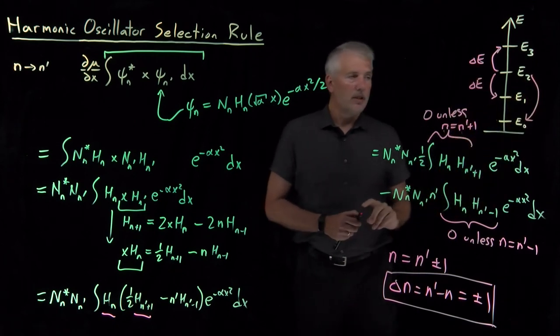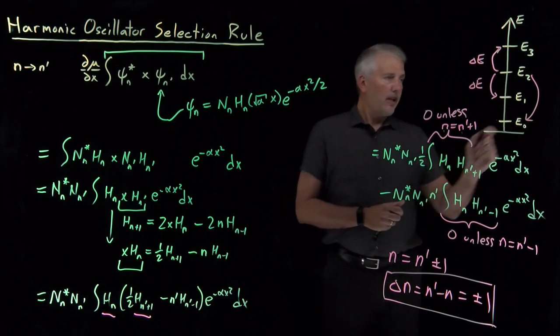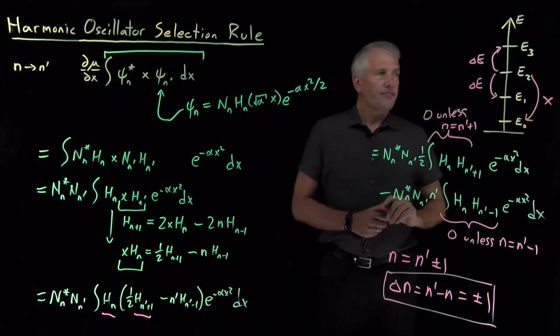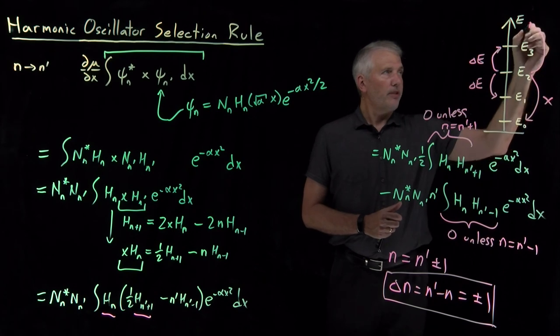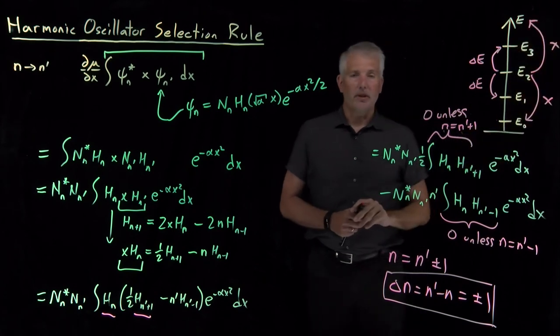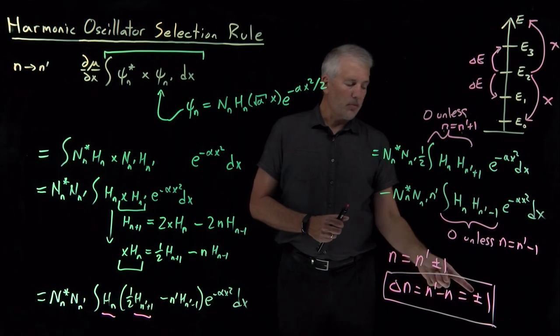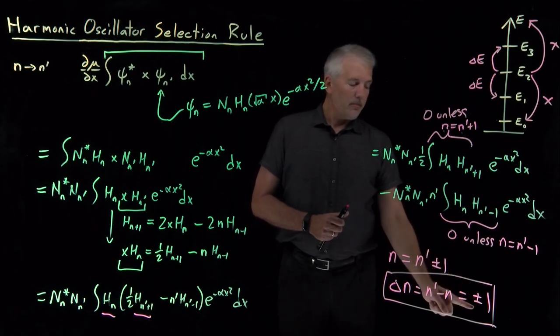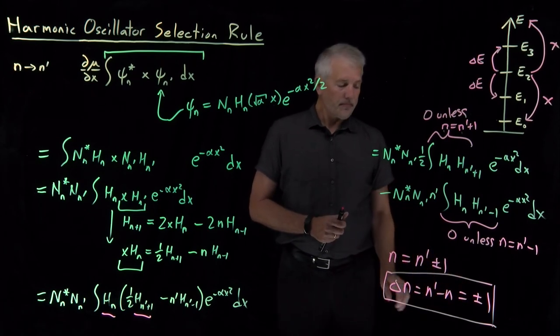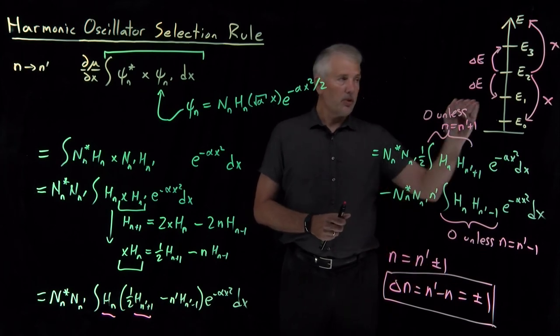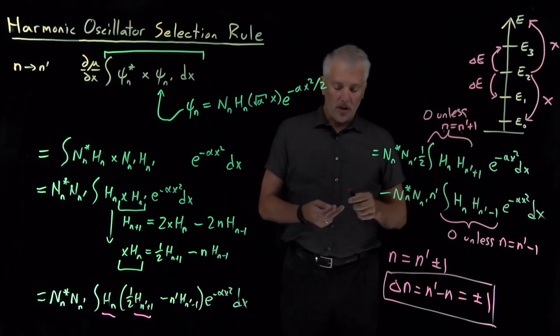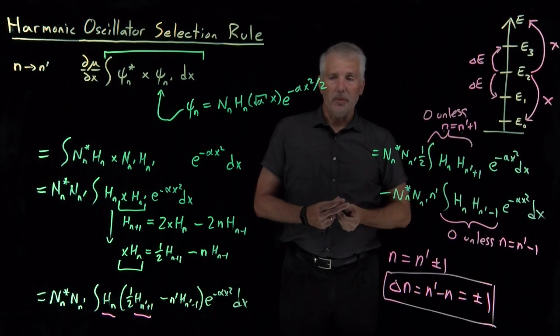This transition, however, E2 down to E0, that will not happen. Likewise, E2 up to E4, that will not happen. The change in the quantum number must be plus 1 or minus 1, plus 1 if we're absorbing light, minus 1 if we're emitting light. So that's the selection rule that tells us what transitions are allowed for the harmonic oscillator vibrational transitions.